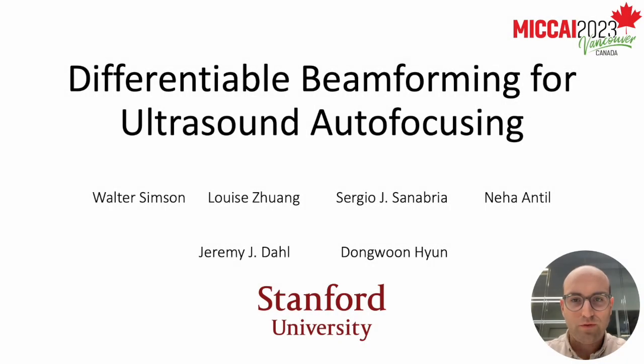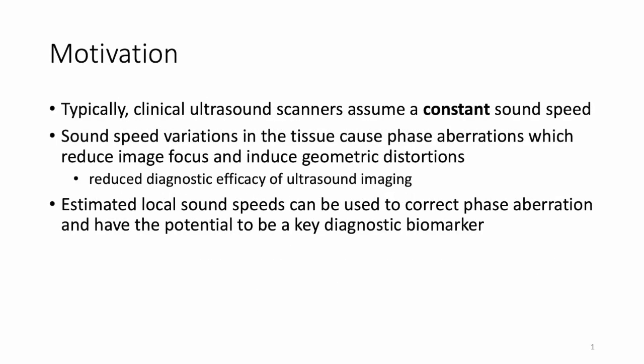We present Differentiable Beamforming for Ultrasound Autofocusing. Typically, clinical ultrasound scanners assume a constant sound speed. Sound speed variations in tissue cause phase aberrations, which reduce image focus and induce geometric distortions in the image. These artifacts can reduce the diagnostic efficacy of ultrasound imaging. Estimated local sound speeds can be used to correct phase aberration and have the potential to be a key diagnostic biomarker.